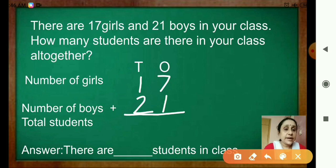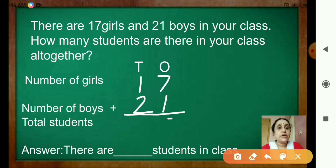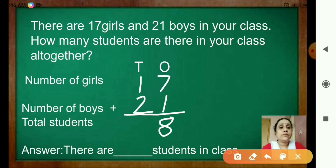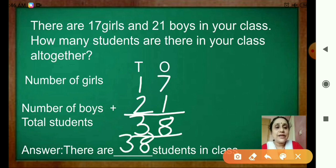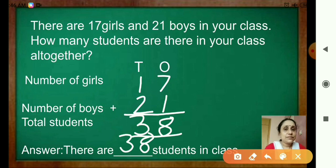Now start adding 17 plus 21. Start from the ones place. 7 plus 1 is 8. Then 1 plus 2 is 3. So the answer is: there are 38 students in the class. Have you understood how to do word problems?